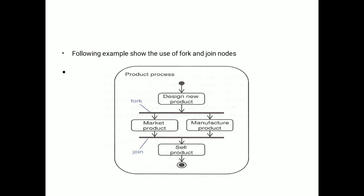Here is fork and join. Your product process is there. Initial is there. Design new product is there. When forking, these parallel operations—market product and manufacture product—we can see. Then joining is there, and finally sale product is there, and at the last your stop is there.